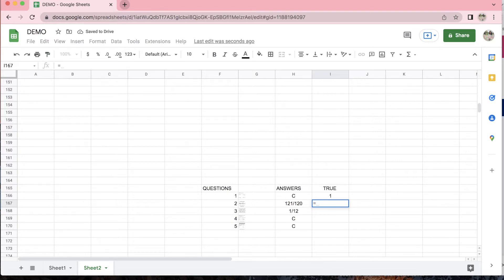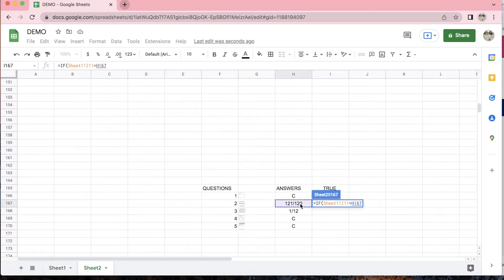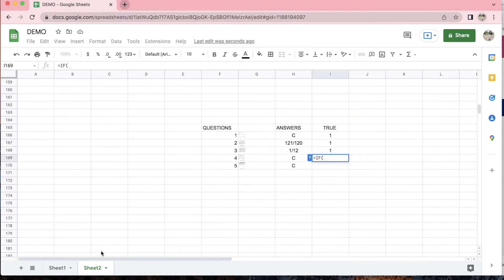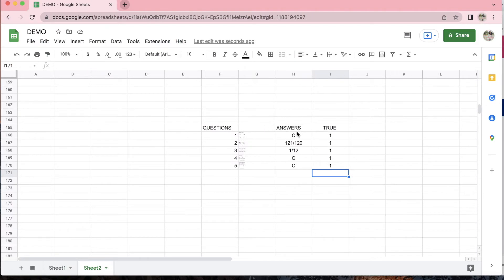We're going to do it again. So equal sign IF, the second answer is equal to the second answer in the answer sheet, then what do I want? I want it to give me a 1. If not, I want it to give me a 0. So we're going to keep doing that. So now you can see that they gave me all 1s because all the answers on Sheet 1 match all the answers in the answer key.